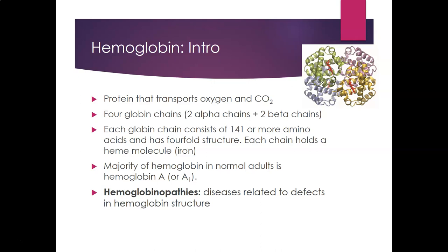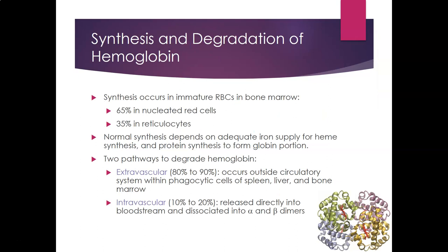Hemoglobinopathies are diseases related to defects in hemoglobin structure. Synthesis of hemoglobin occurs in immature red cells in bone marrow—65% in nucleated red cells and 35% in reticulocytes. Normal synthesis depends on adequate iron supply for heme synthesis and protein synthesis for the globin portion. There are two degradation pathways: extravascular (80–90%), occurring in phagocytic cells of the spleen, liver, and bone marrow; and intravascular (10–20%), where hemoglobin is released into the bloodstream and dissociates into alpha and beta dimers.